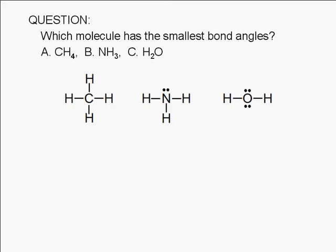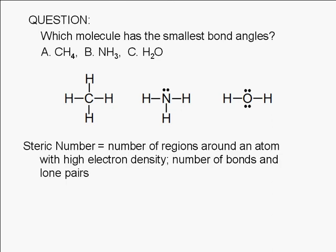Then we determine the steric number for the central atom in each molecule. The steric number is the number of regions around an atom with high electron density. This is just equal to the number of bonds and lone pairs. Each lone pair counts as one region. A single bond counts as one region.